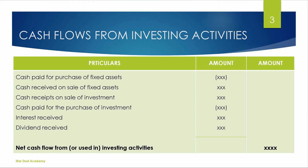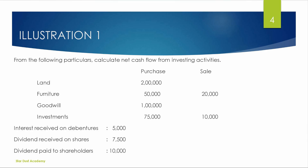Next, cash paid for purchase of investment — we pay the amount, and the figure is negative. Interest received is a positive figure. Dividend received on shares is also a positive figure. Net cash flow from investing activities can be negative or positive — this is the net cash used in or from investing activities.